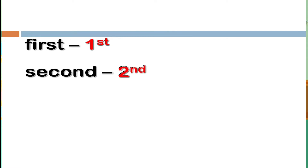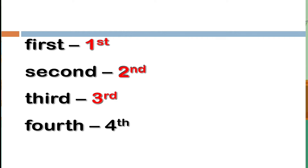How are we going to write the symbol? First — we write it as 1st and read it as first. Second — we write it as 2nd and read the symbol as the word second. How about this one? Third — we write it as 3rd and read it as third.